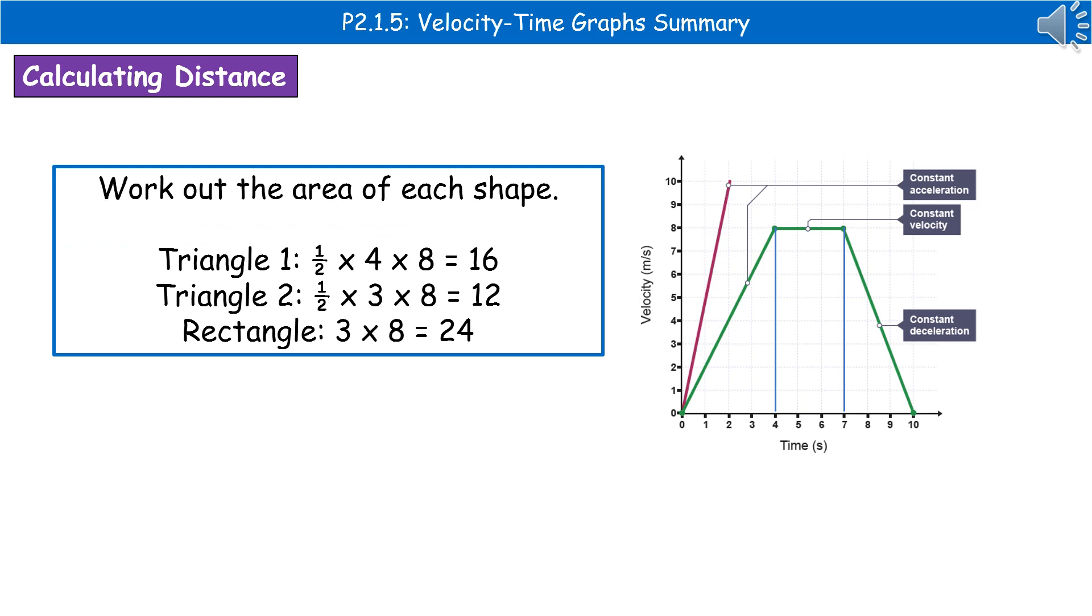Once you've divided the shape up into easier areas, work out the area of each shape you've created. We've got two triangles and a rectangle. Triangle 1 is half times the base times the height, so half times 4 times 8, which gives us 16.